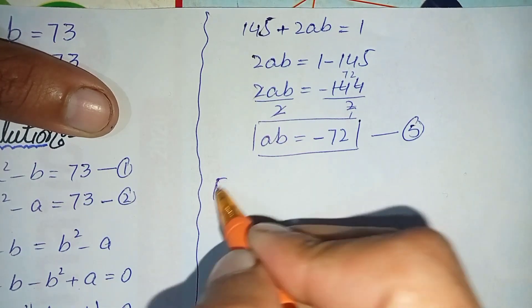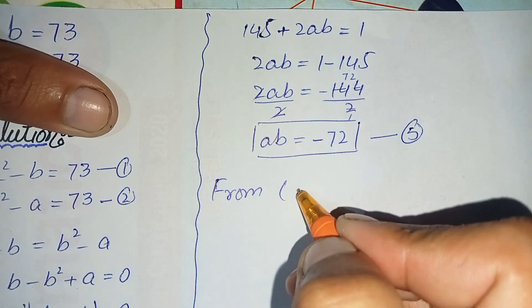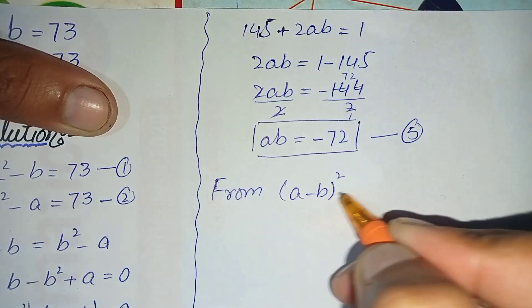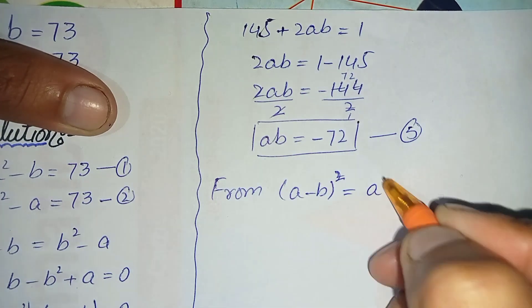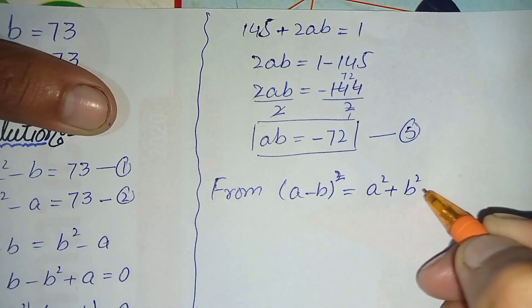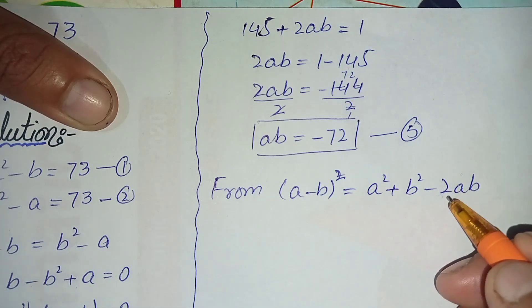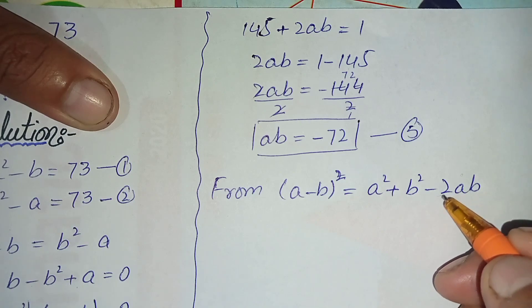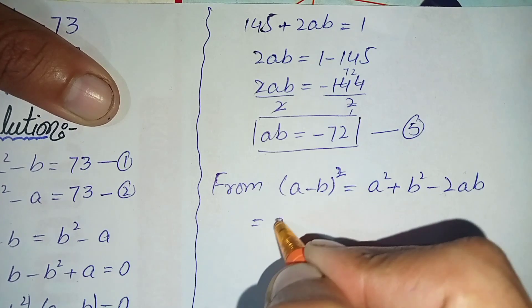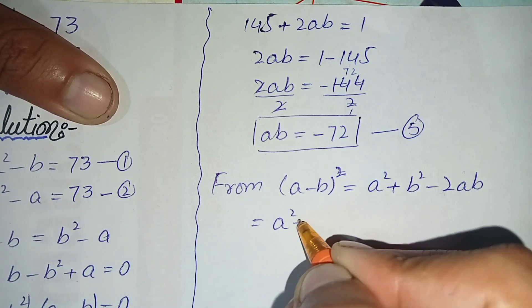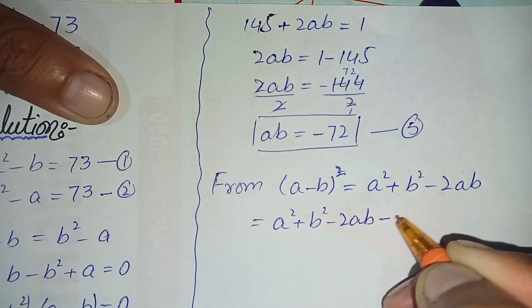Now we use the famous algebraic identity: (a minus b) squared equals a squared plus b squared minus 2ab. In the next step we add and subtract 2ab to rearrange the expression.